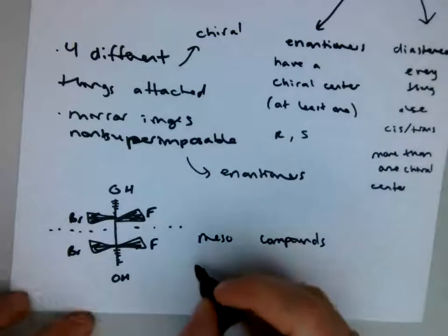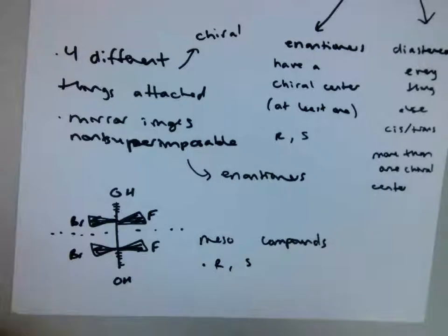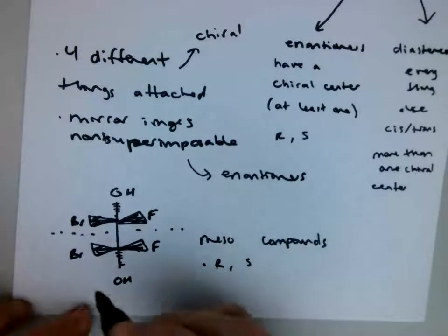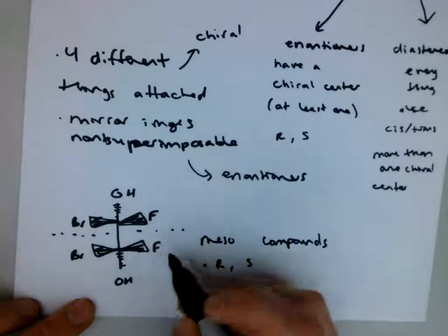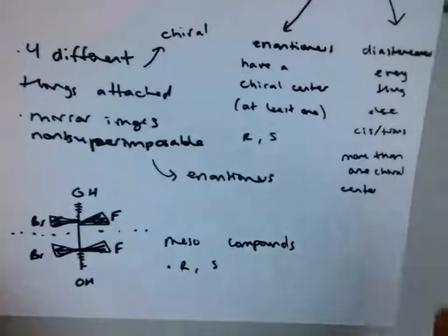Generally, with a meso compound, you're going to have one R chiral center and one S chiral center because they're reflecting each other. And it'll have this plane of symmetry. It has to have the same things attached, right? Like if this was a hydrogen, that's a fluorine, then it's not a plane of symmetry anymore. So that's what you're looking for with meso compounds.